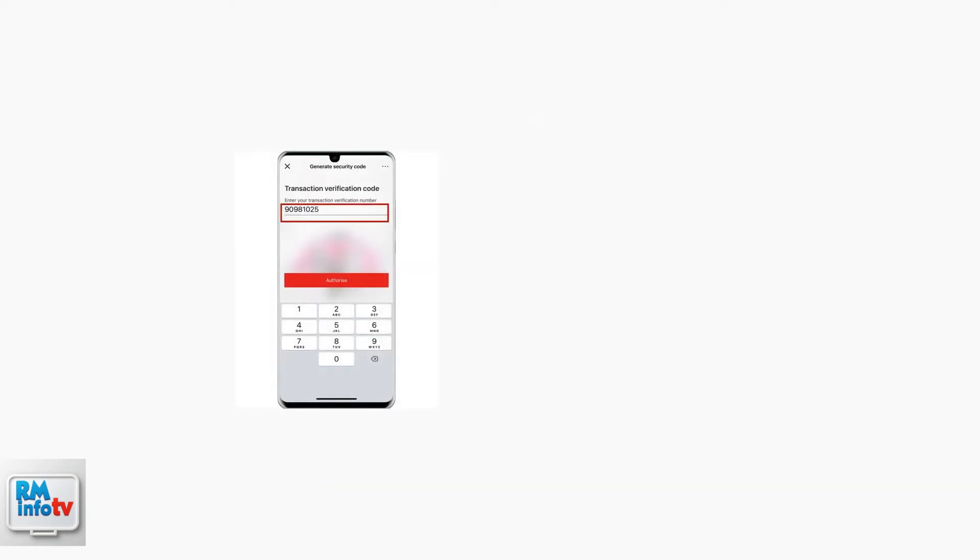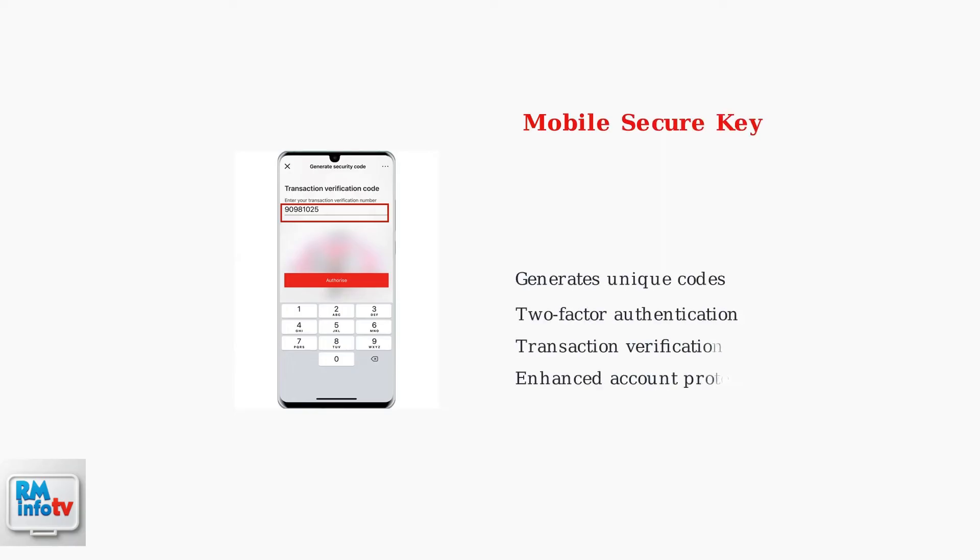HSBC's Mobile Secure Key is a critical security feature that generates unique verification codes within the app. This two-factor authentication ensures that only you can authorize transactions and access sensitive banking functions.